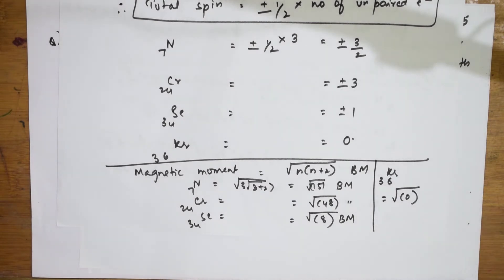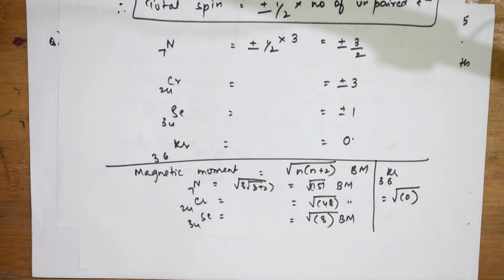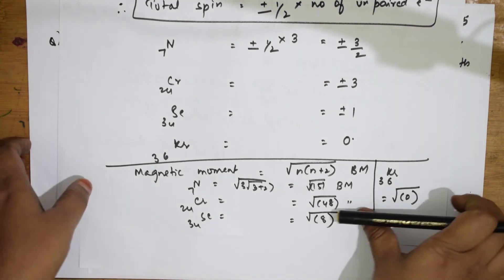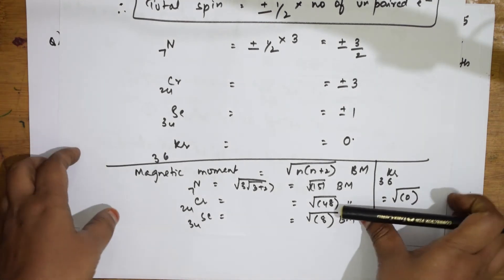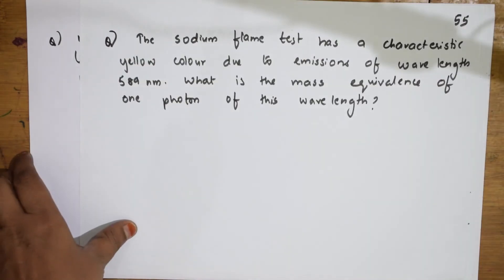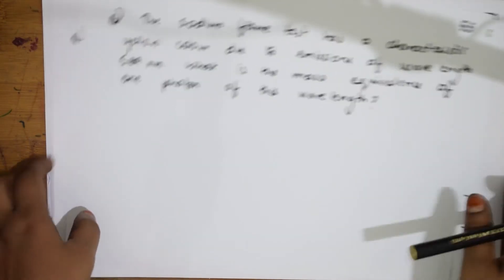Both the spin and magnetic moment concepts are covered in this question. Practice this — it is easy. When all the concepts come together in one numerical, it becomes easy to handle. Let us move on to the next numerical.